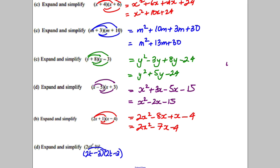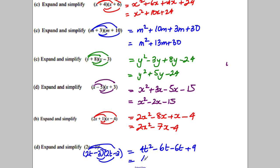Last one: we write (2t − 3)² as (2t − 3)(2t − 3), then expand: 4t² − 6t − 6t + 9 — combining negative 6t and negative 6t gives negative 12t, so the result is 4t² − 12t + 9. Hopefully you found that useful for multiplying out two brackets.